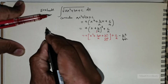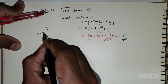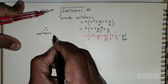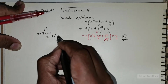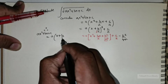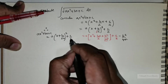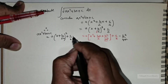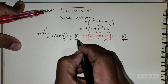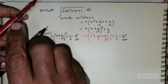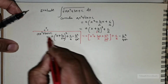Therefore, I can now rewrite ax² + bx + c as a times (x + b/(2a))² + c/a − b²/(4a²). This is the representation I will be using.